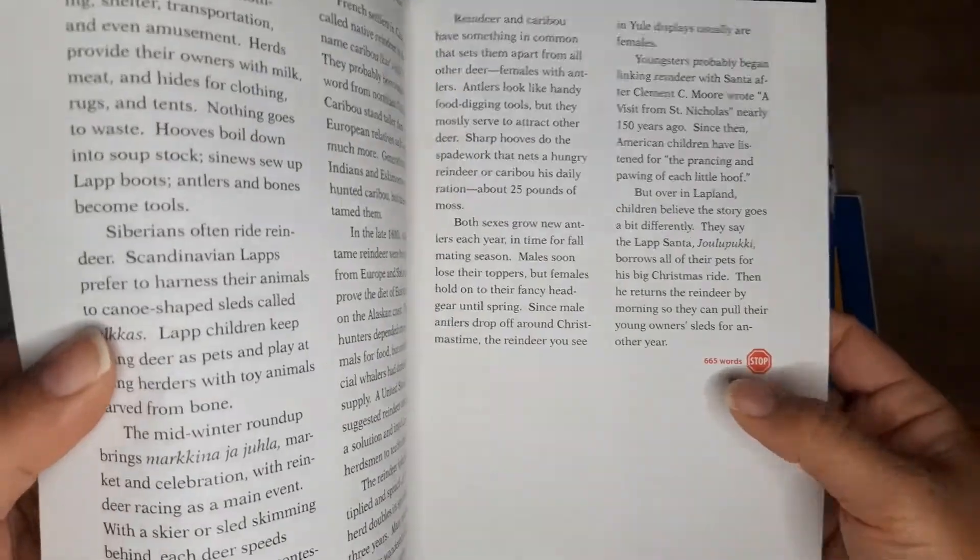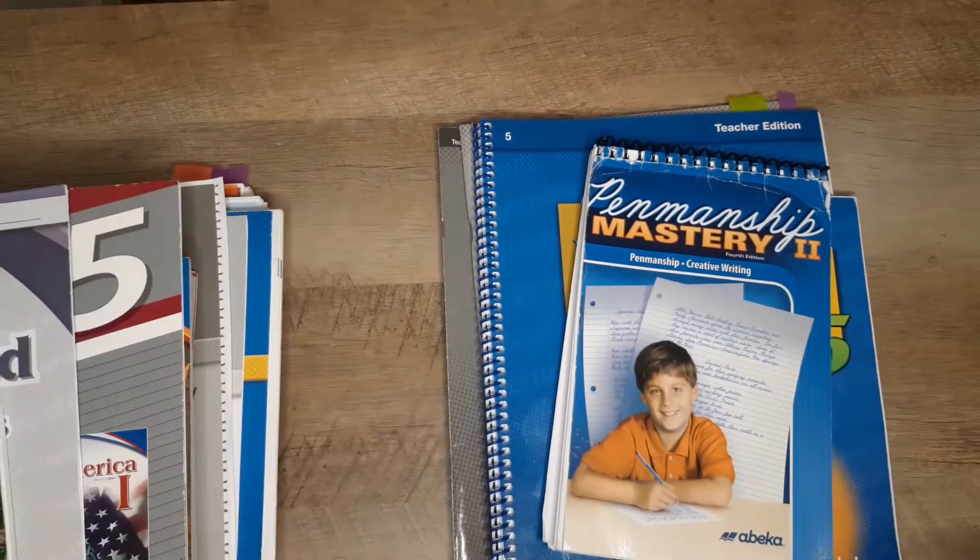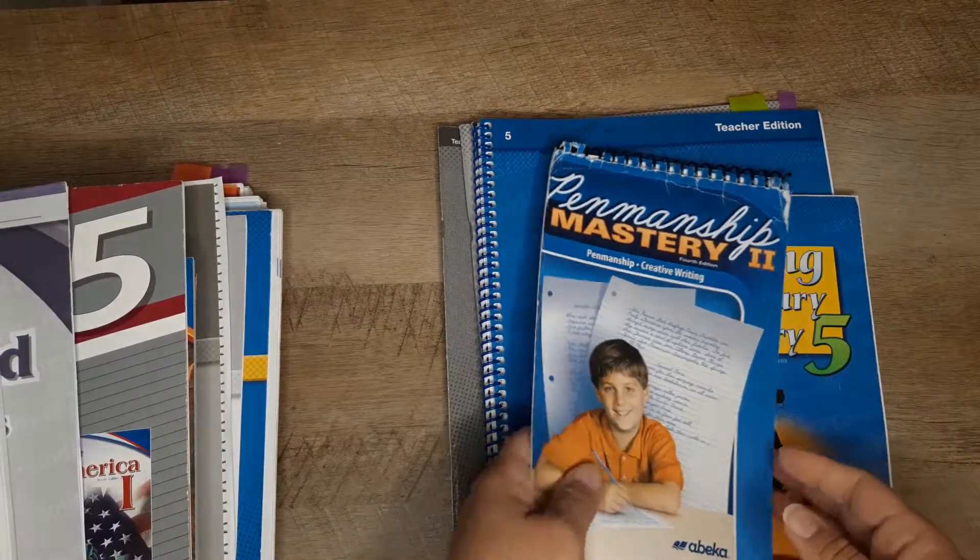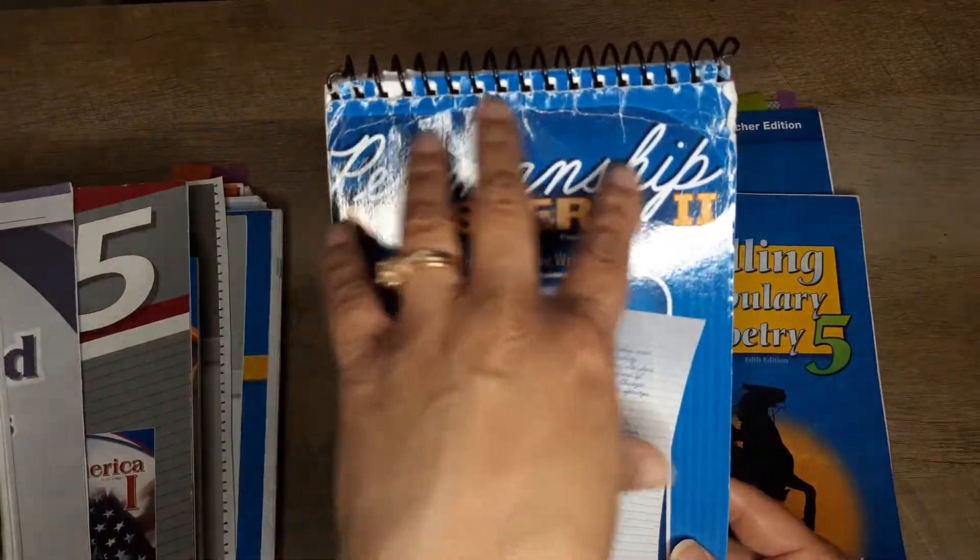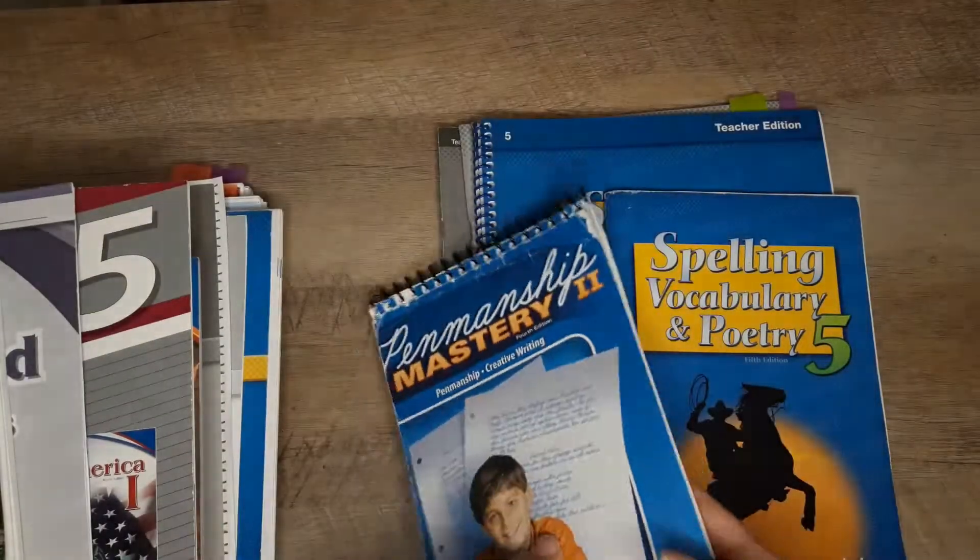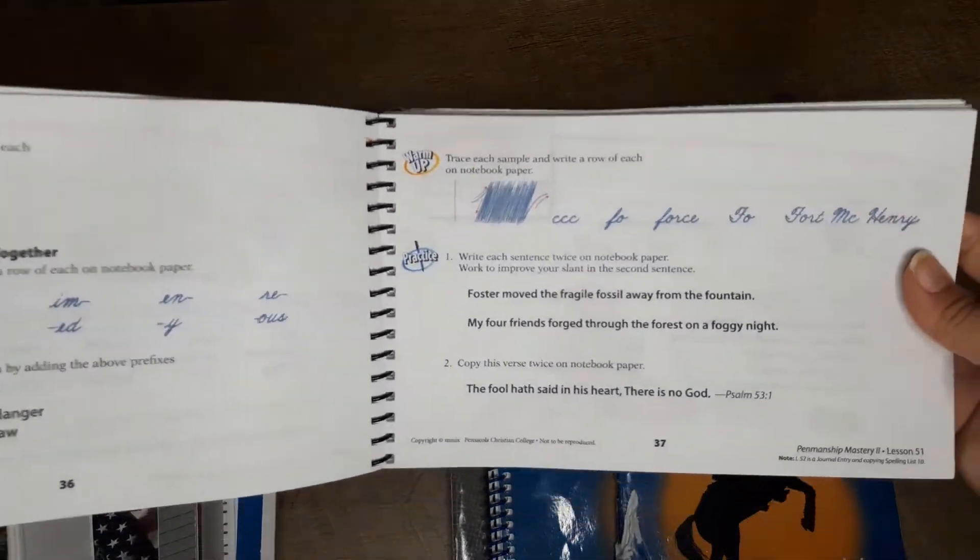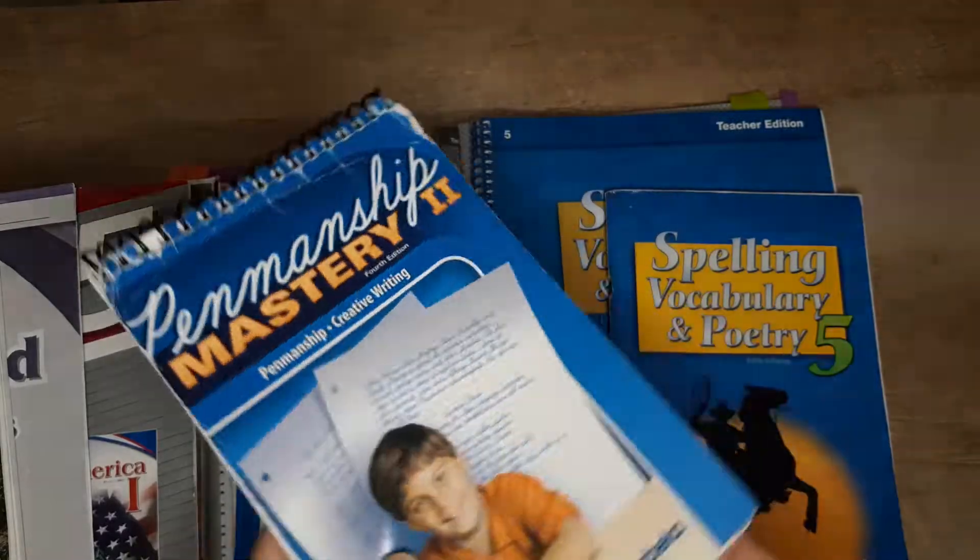Basically you're timing their reading, so they would read the selection until this point and then you stop the timer. It tells you how to calculate how many words per minute they read. Here's the penmanship. I took this apart and spiral bound it as well. Basically everything is in here and they do everything on a separate sheet of paper.